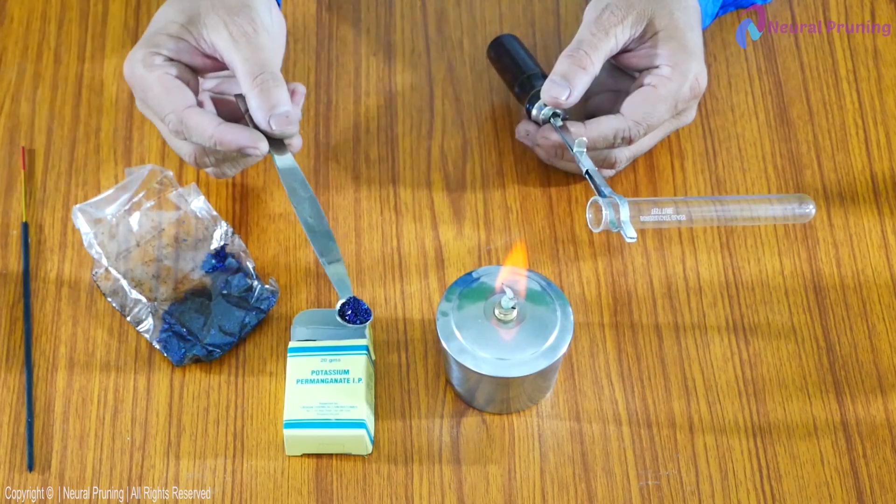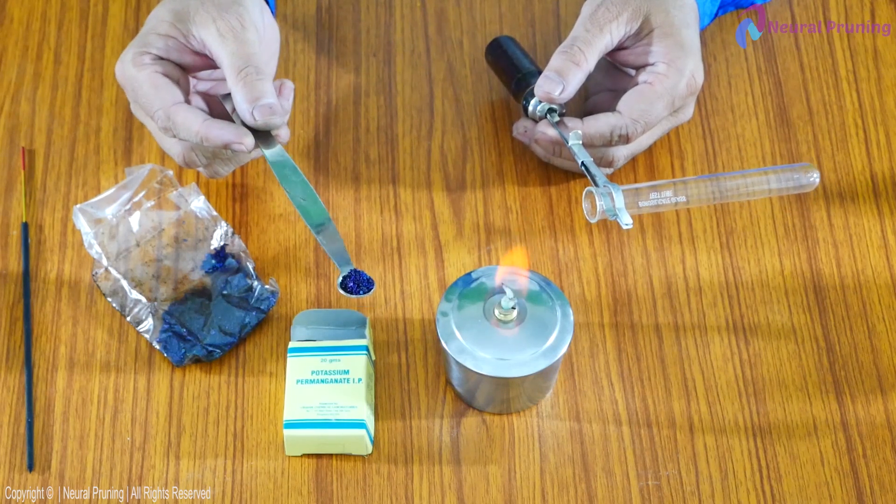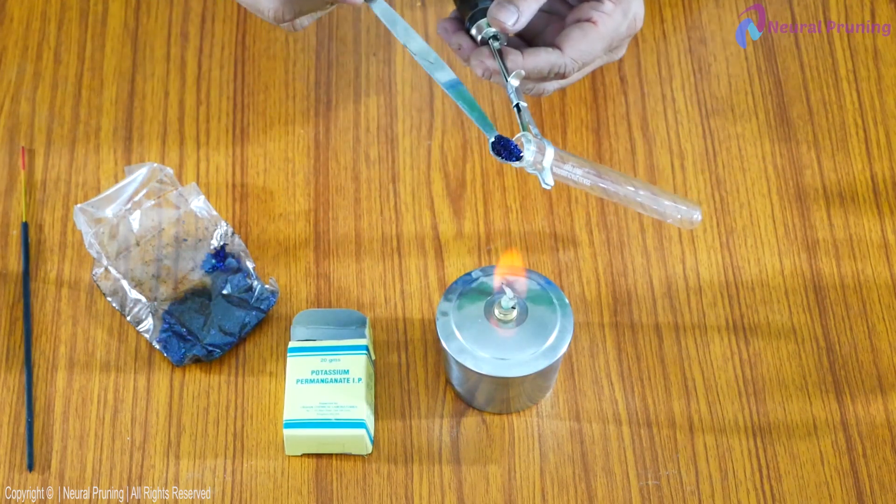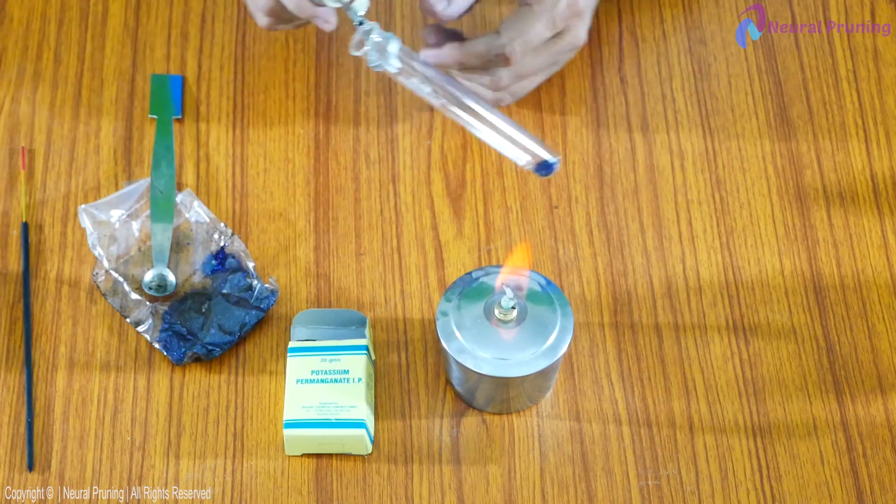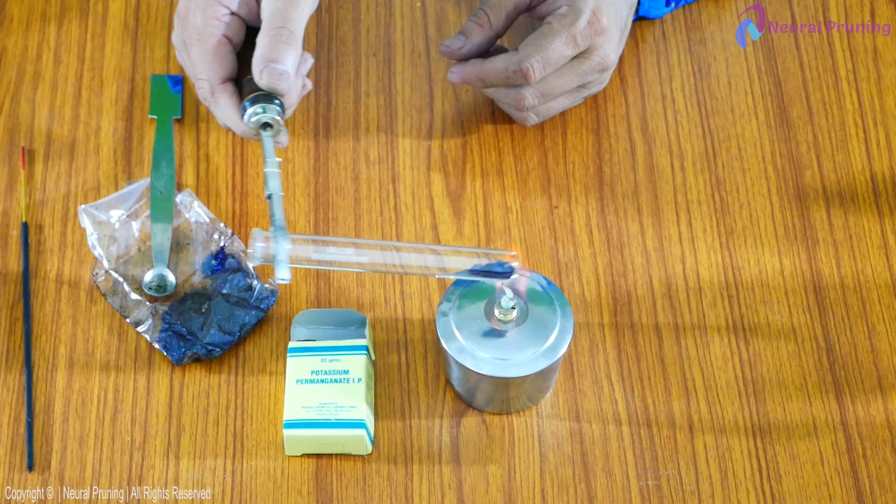These are potassium permanganate crystals. Now, let me heat potassium permanganate or K-menophor crystals. Observe the change carefully.